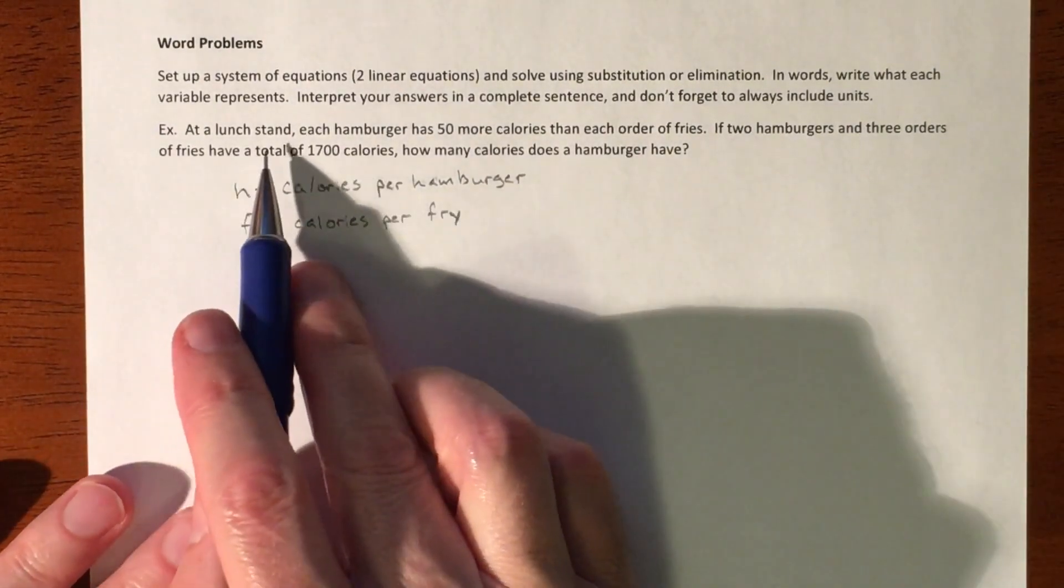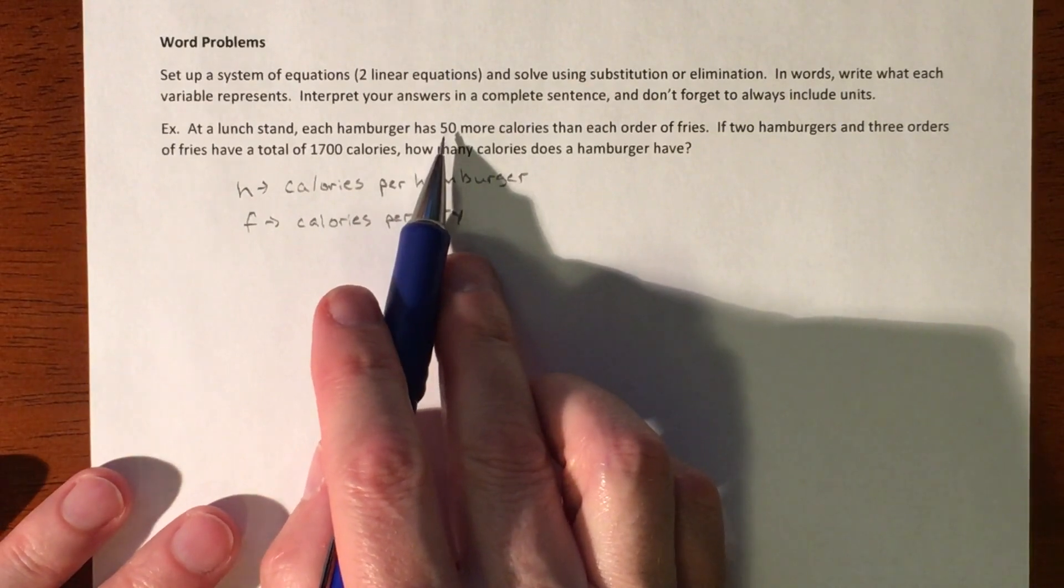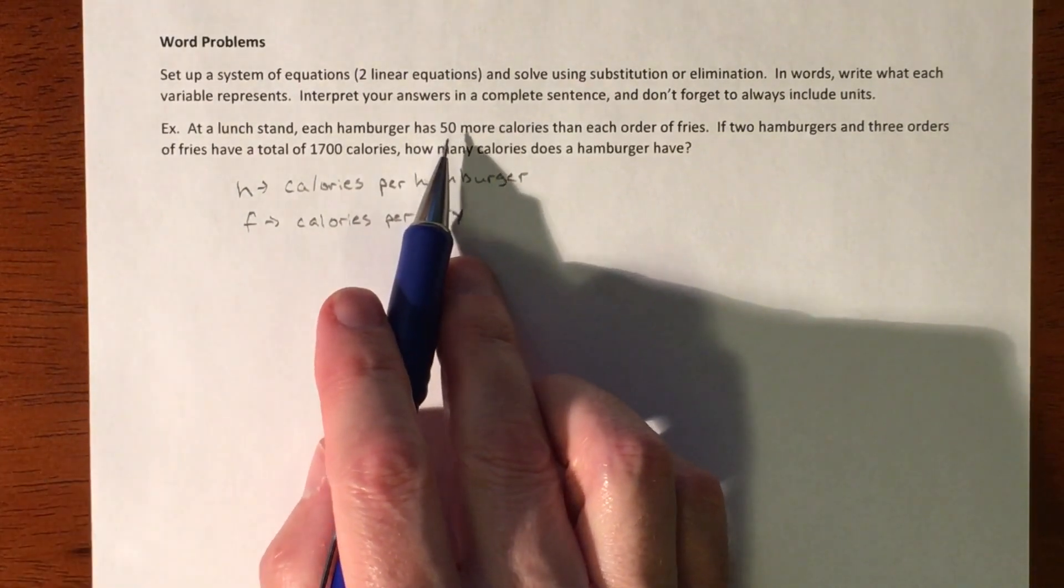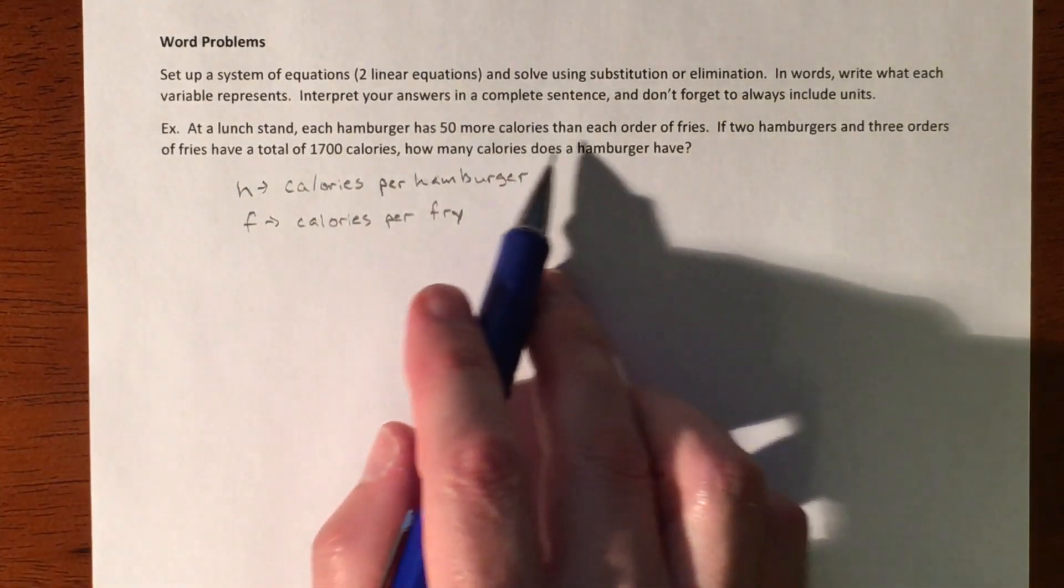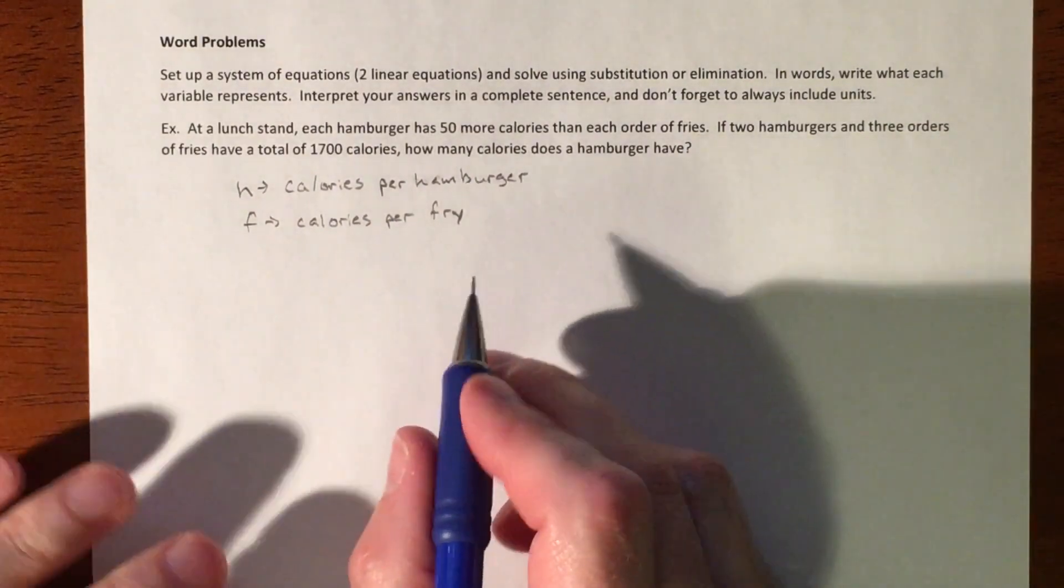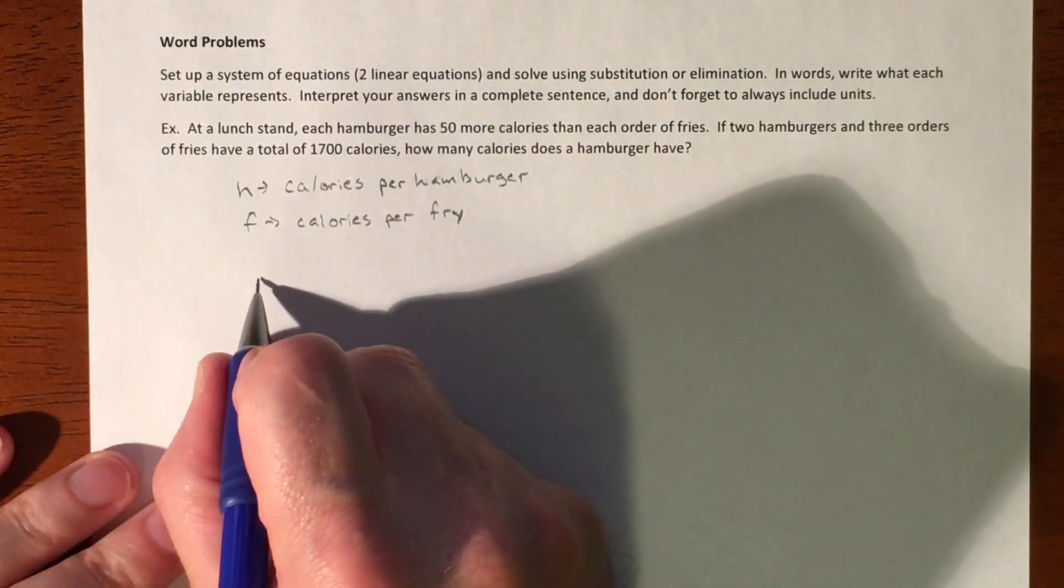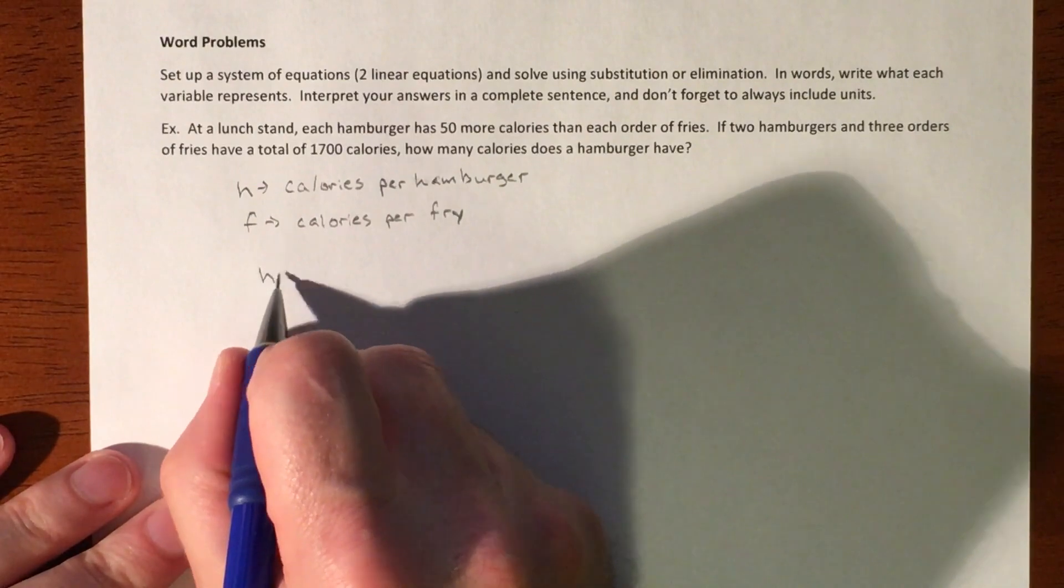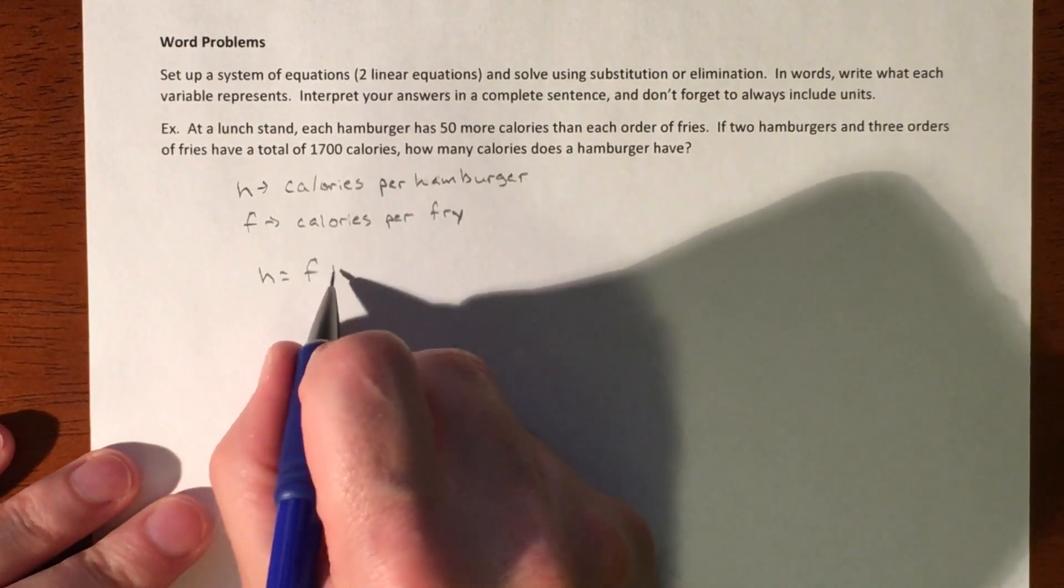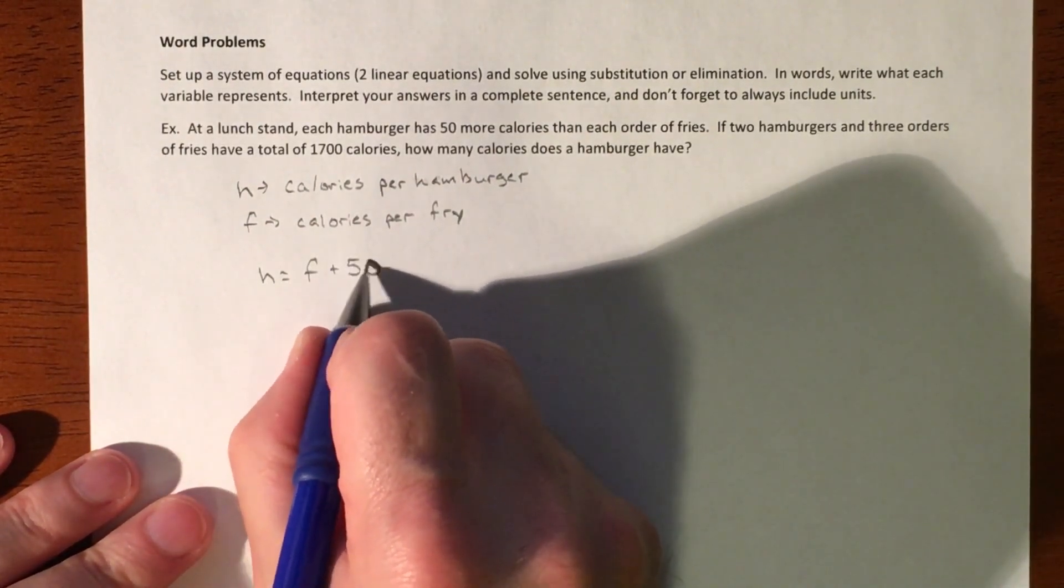So it says each hamburger has 50 more calories than our order of fries. So we have our hamburger is going to equal our fry plus 50.